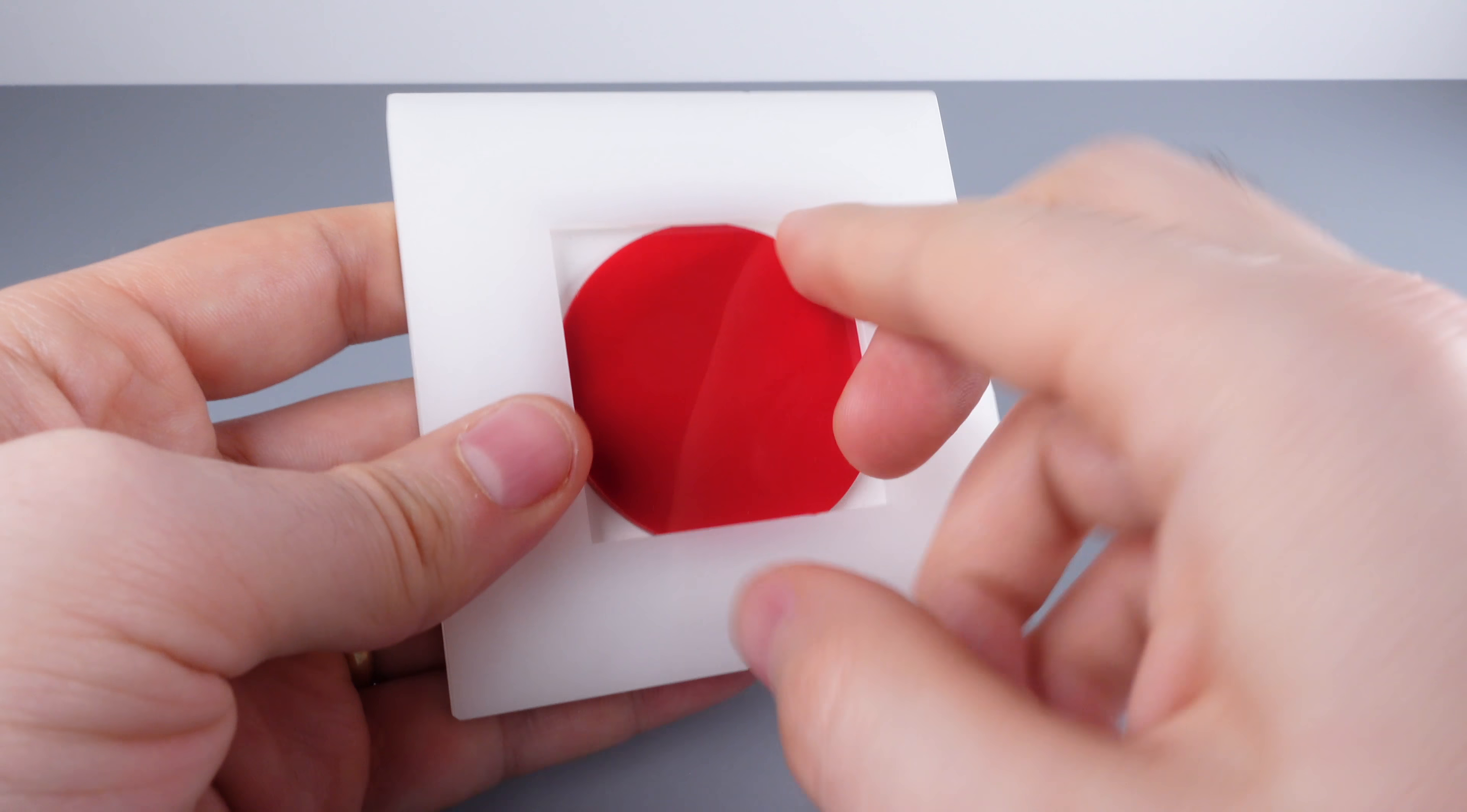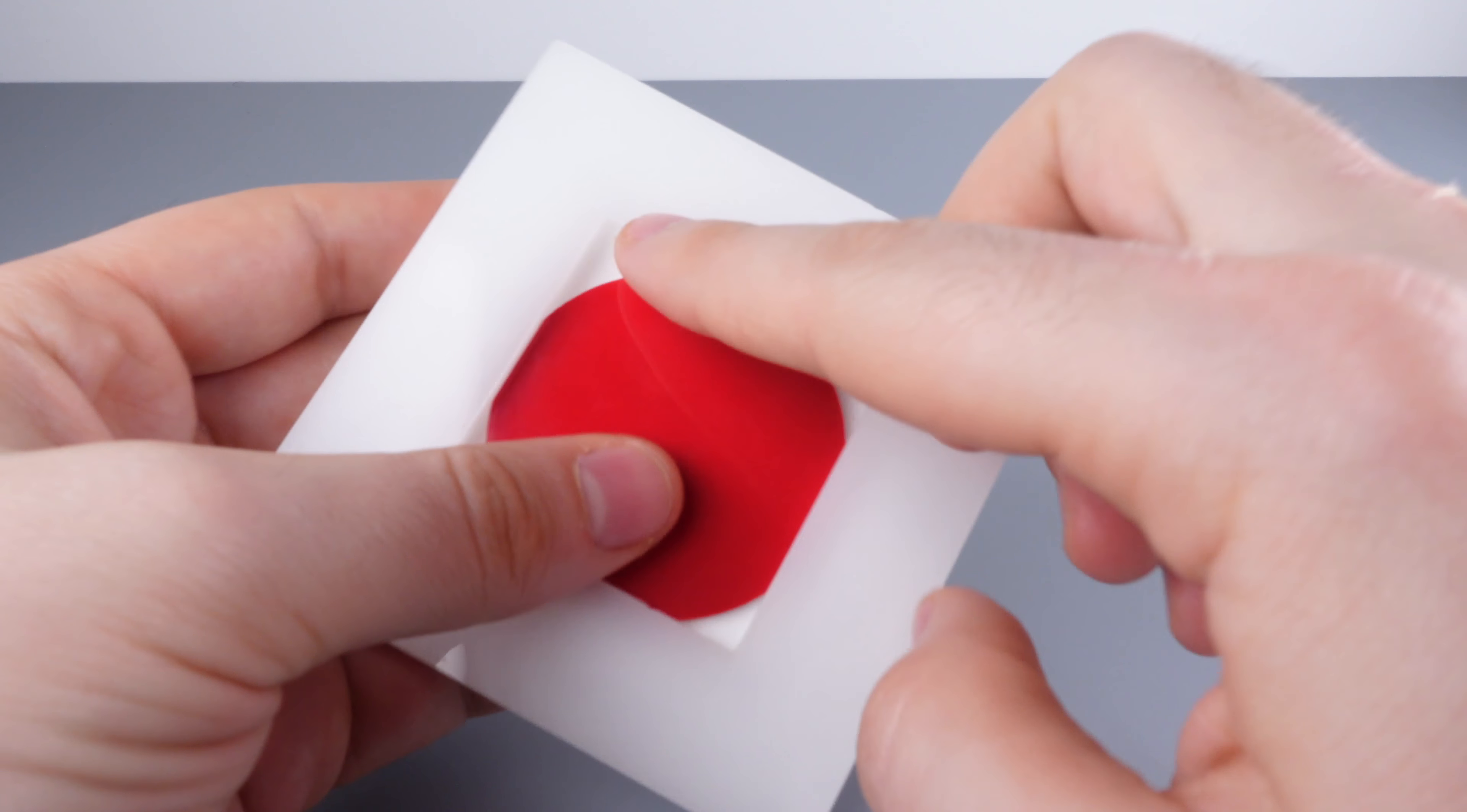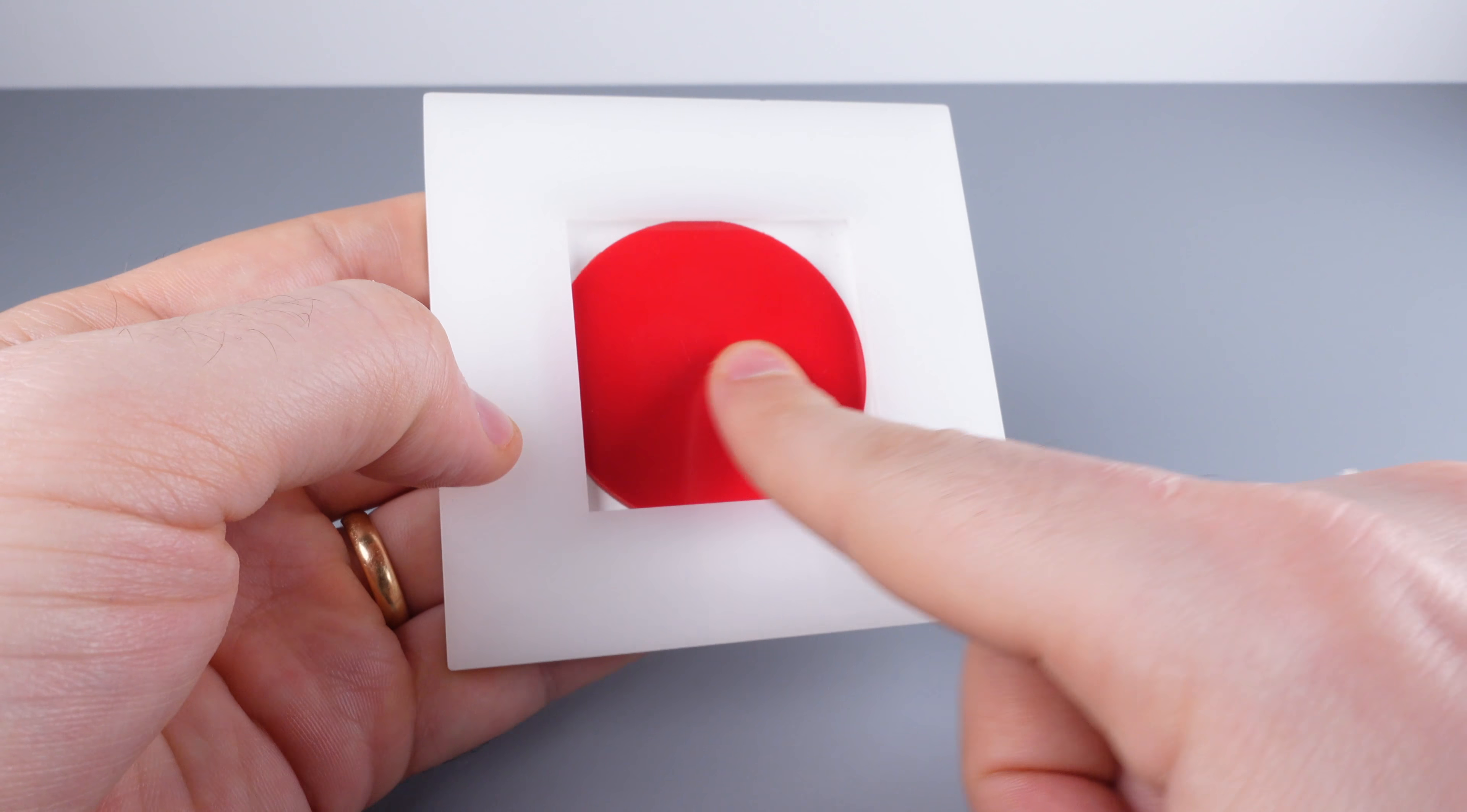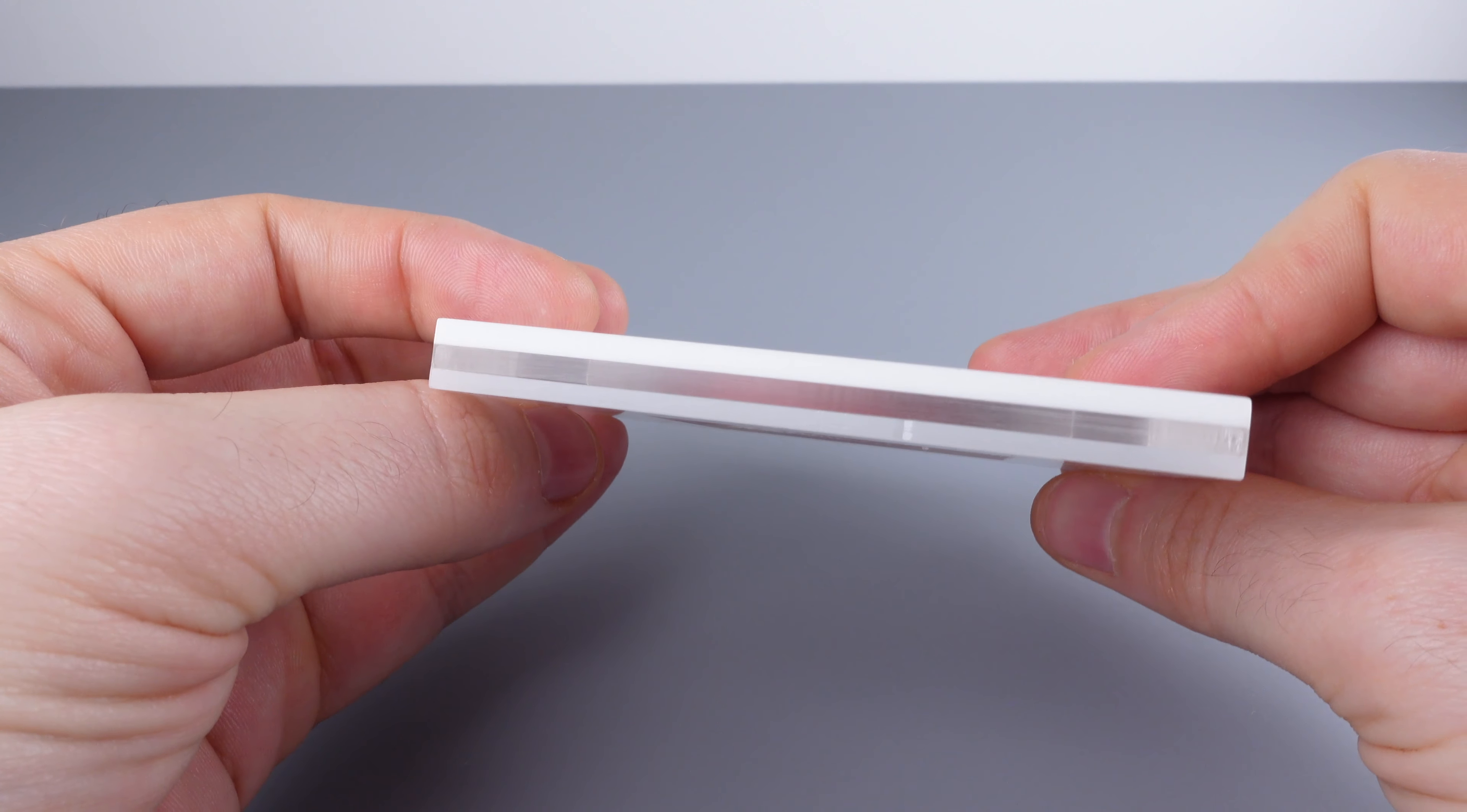So no matter how hard you try to wiggle this circle out of the square opening here, there's no way to get it to budge at all. It moves ever so slightly a few millimeters in each direction, but other than that there's not much to note here.